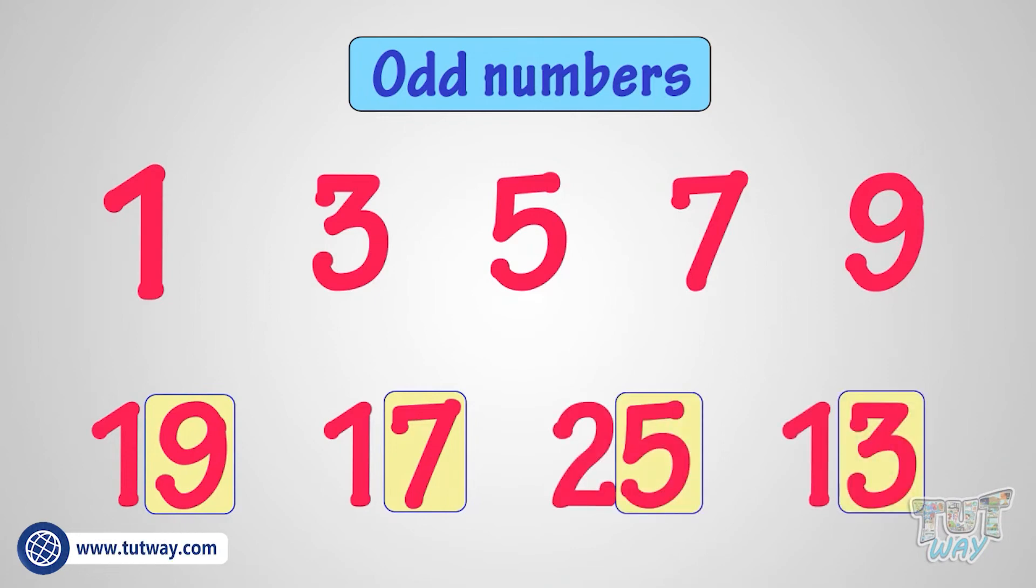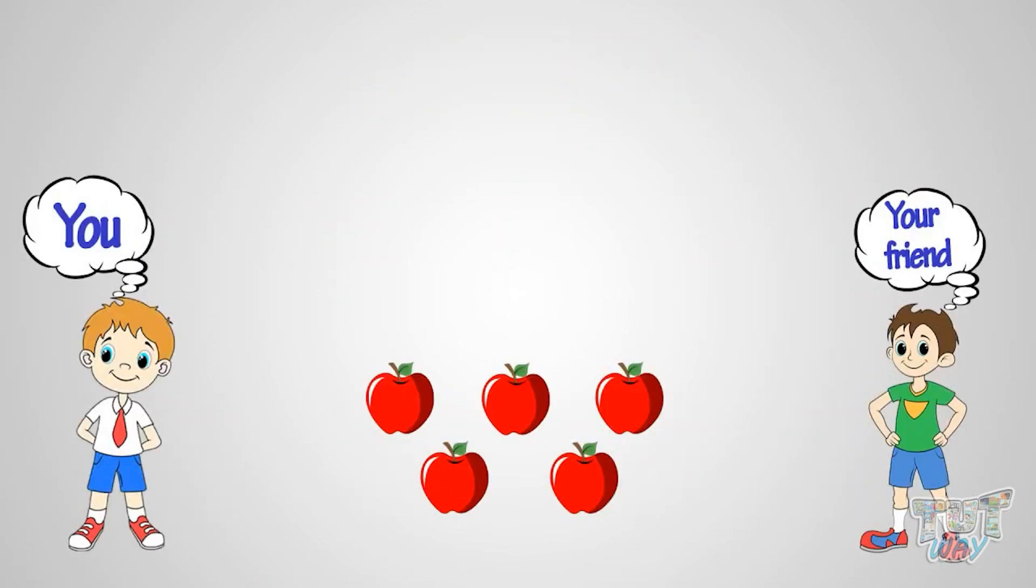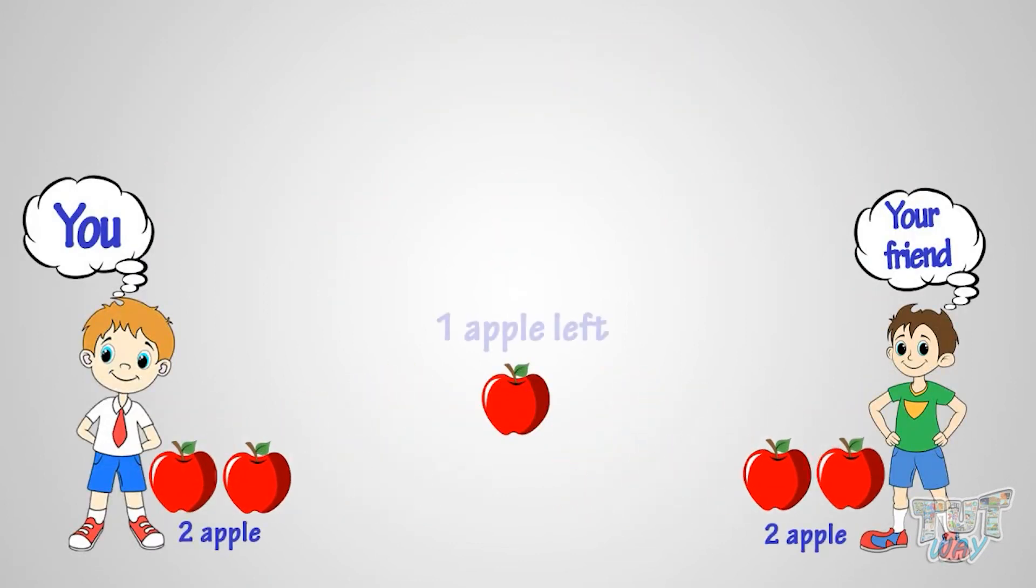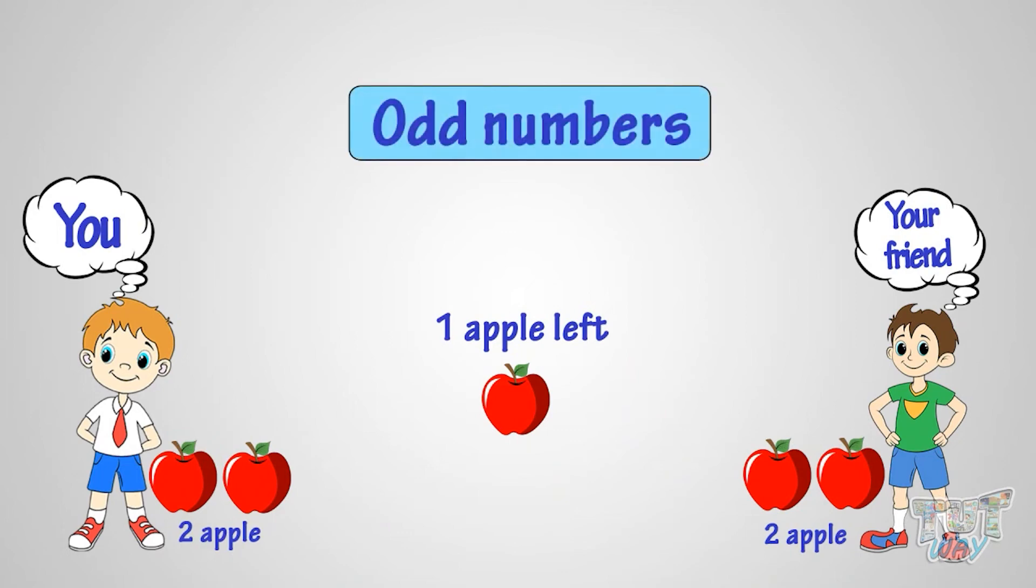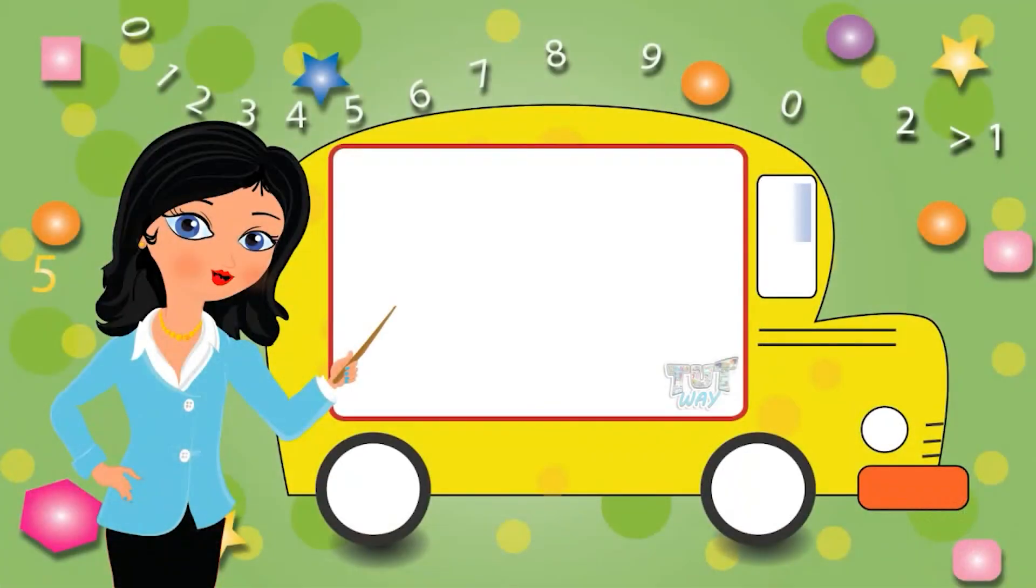Good! So what have we learned? We have learned that any number of things that cannot be shared equally are odd number of things. Now go ahead and take a quiz to see your progress. Bye bye!